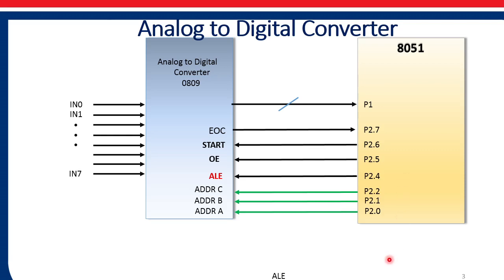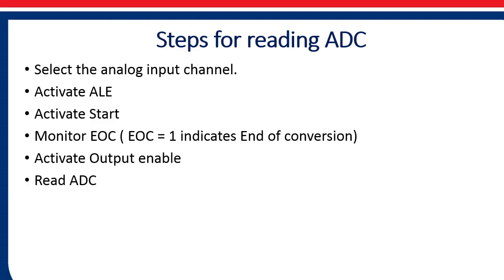The steps required to read the value of ADC are: first, we need to select the addresses for the analog input channel. Then we need to activate ALE — that means we have to generate a pulse on ALE which will latch the address.